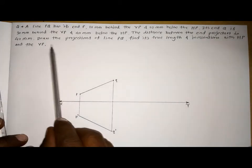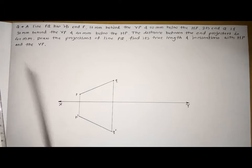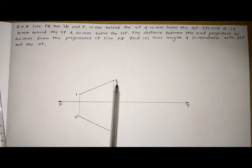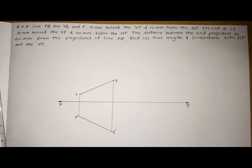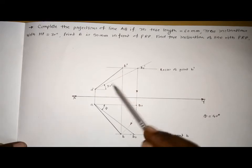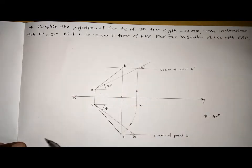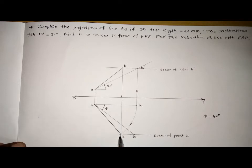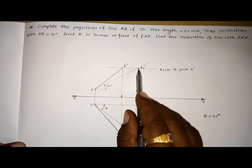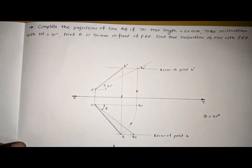Next, what is asked is to find the true length and inclination of line PQ with the HP and VP. To find the true length, we have to transfer the front view into the top view position and the top view into the front view position. To understand how, we refer to the previous problem concept: if the top view is rotated and transported vertically, it will meet with the true length. Similarly, rotating the front view and transporting vertically gives the true length in the top view.